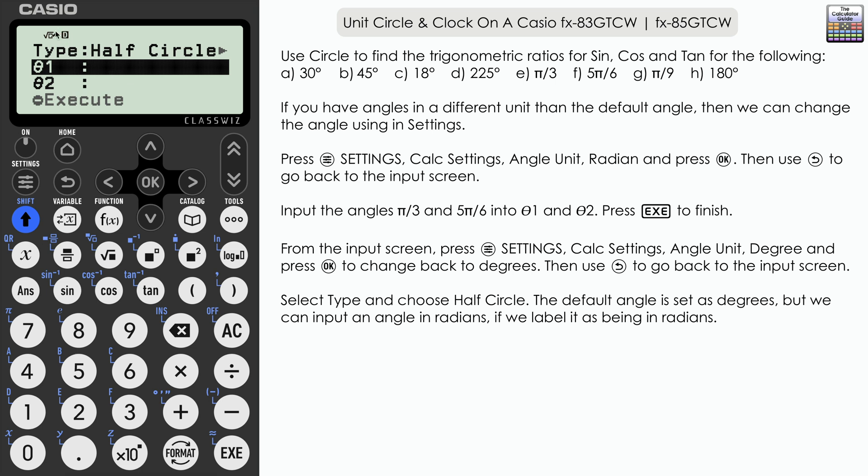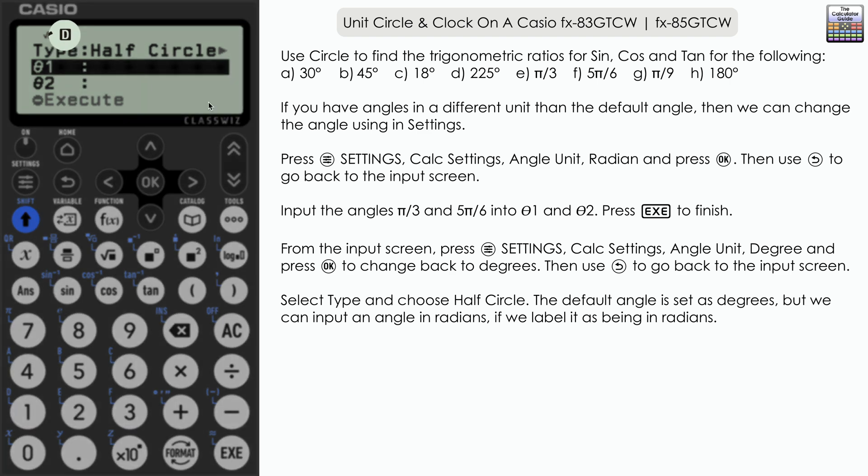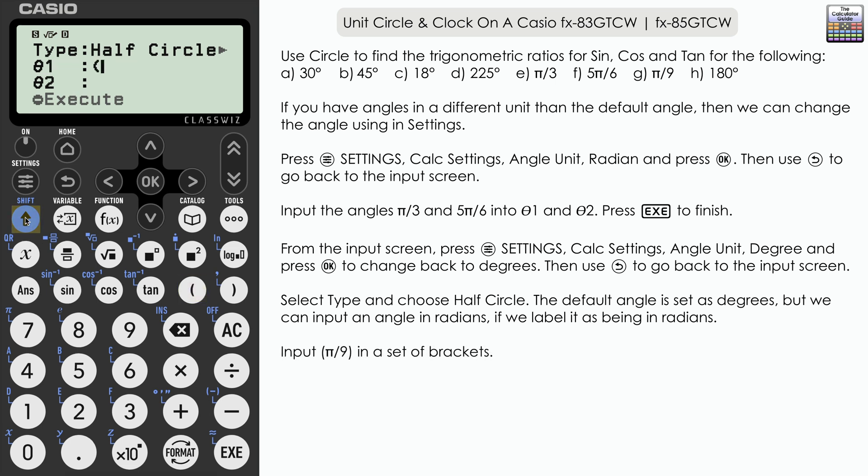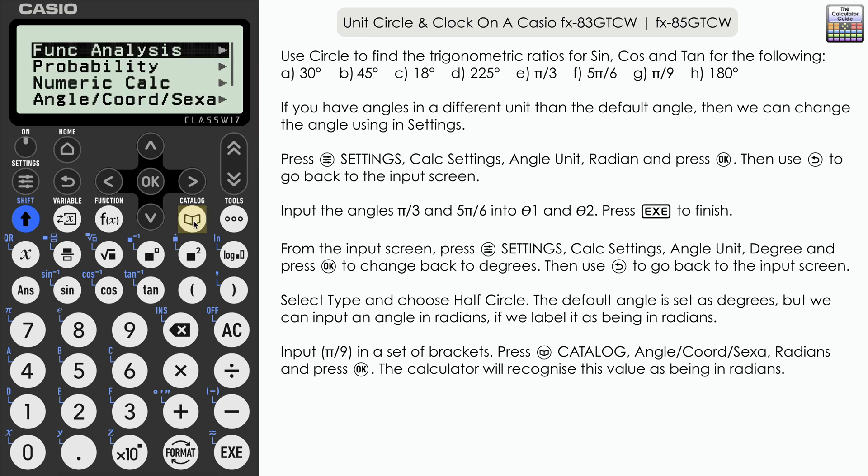I'll use this opportunity to show you how you can input an angle in radians whilst the default angle unit of your calculator is degrees. Before I input the angle which is pi over nine, I'm going to put this into brackets and parentheses because we are going to input something after the angle and we need it to apply to the whole of the fraction.